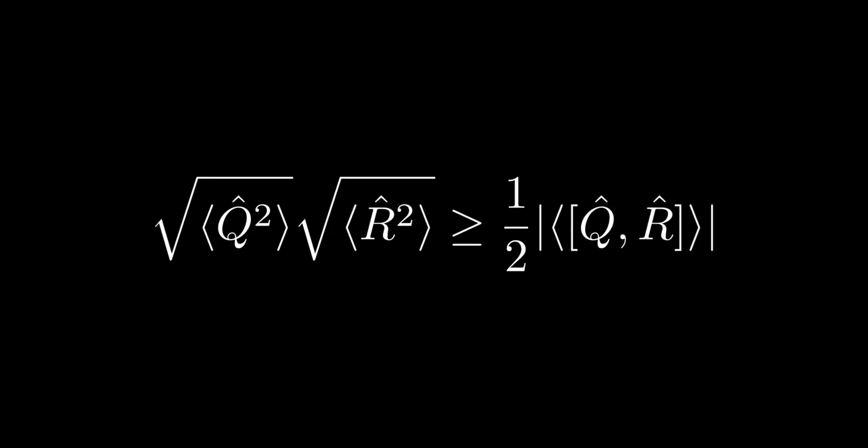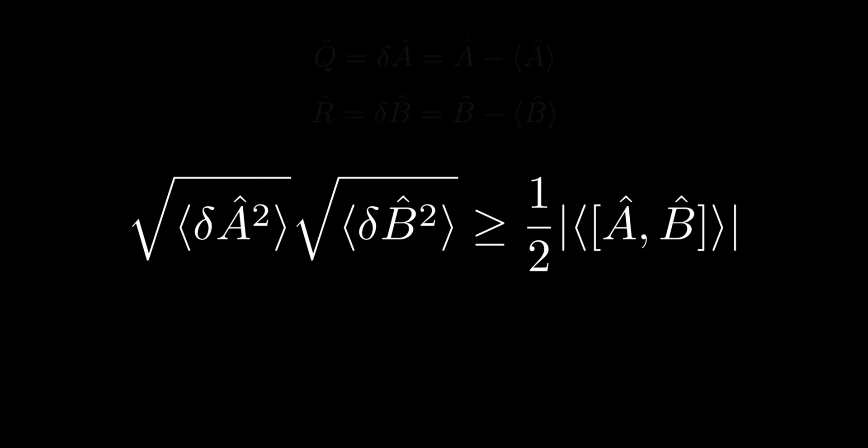And now we make the following replacements. We swap Q with delta A, which is defined as the difference of the operator with its expectation value, and we do the same thing for R with delta B. We also note that the commutator is invariant under additive constants, as constants commute with everything. We define the uncertainty as the root-mean-square deviation, and the result is the uncertainty principle.